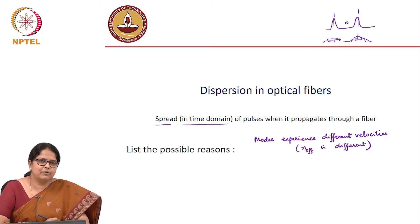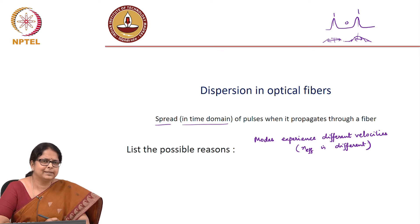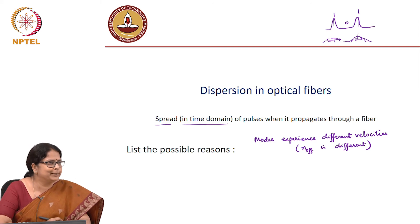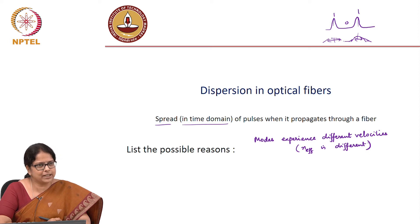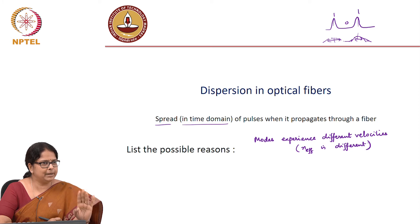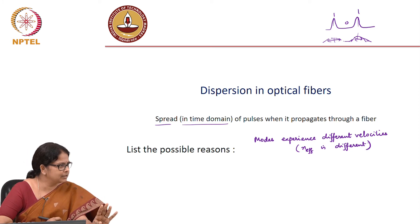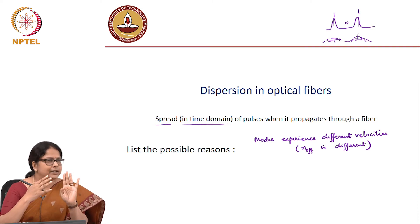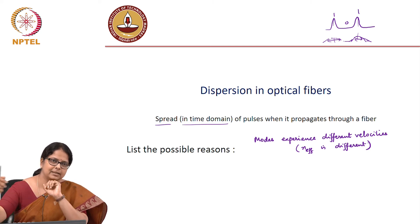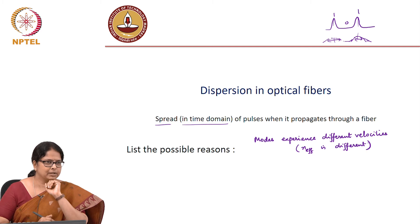What does amorphous silica have to do with spreading the pulse? Think beyond modes of the fiber. The laser source has a line width, so there are different colors propagating, and because different colors are propagating, the material offers different velocities to different colors. All of them started together, but at the receiver end, all these colors appear at different times, so you have dispersion.